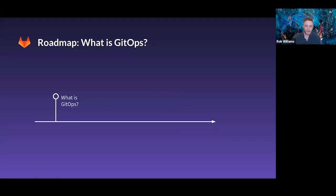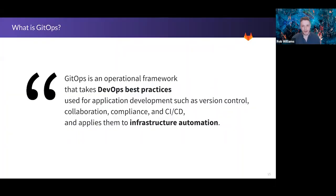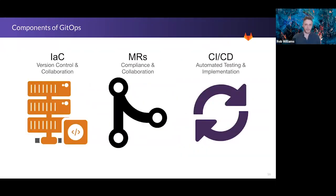Like a lot of tech terms, GitOps has many definitions. GitLab defines GitOps as an operational framework incorporating DevOps best practices and applying those to infrastructure automation — a long fancy way of saying it's DevOps for infrastructure. It really brings the concept of automation and all that comes with it to infrastructure. There are three main components that provide the value in DevOps that we're going to take into our operations practice.